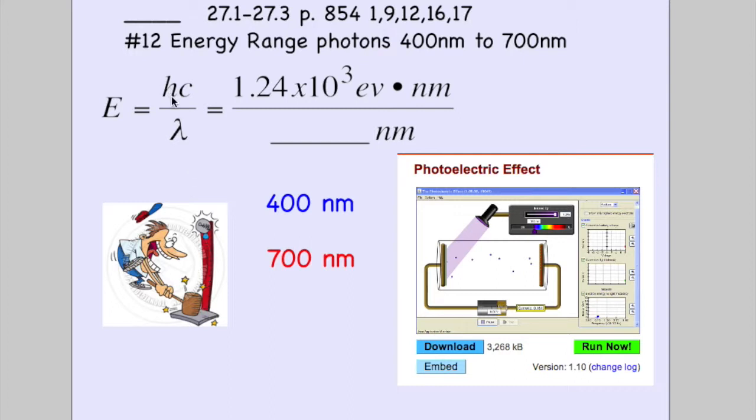And we've talked about this before, using HC, a constant times a constant, and your fundamental constant sheet has this nice one in terms of EVs and nanometers. You could put in Planck's constant, you could put in the speed of light,